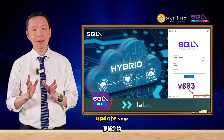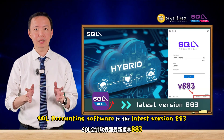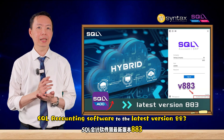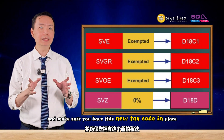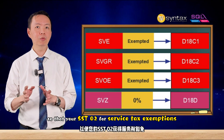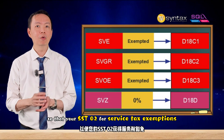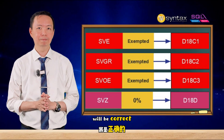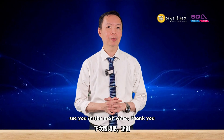So please update your SQL Accounting Software to the latest version, 883, and make sure you have these new tax codes in place so that your SST02 for service tax exemptions will be correct. That's all for today. I'm Brian from Syntax Technology. See you in the next video. Thank you.